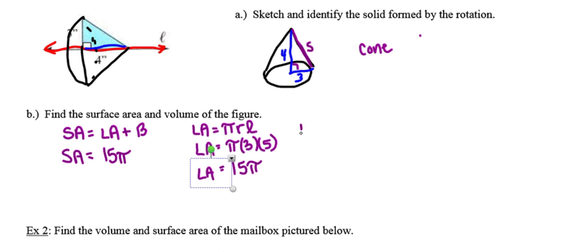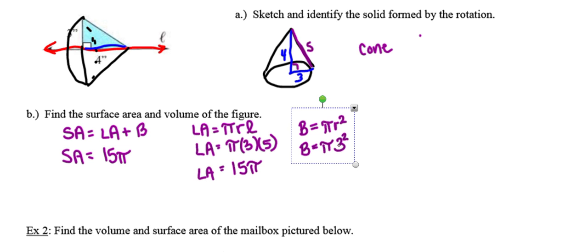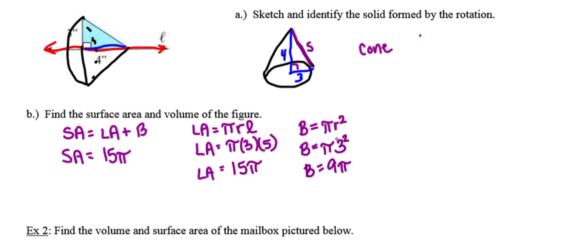Now I need to find the area of the base. For any cone, the base is a circle, so the formula is area equals pi times r squared. The area of the base ends up being 9 pi. Combining the lateral area with the area of the base gives a total surface area of 24 pi square inches.